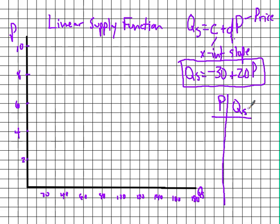We'll plug numbers in and get points on the graph. Starting with a price of zero: plugging zero in for P makes that term zero, so quantity supplied equals negative 30. You can't have a negative quantity supplied — you can't have less than zero supply — but this is still a point on the line.